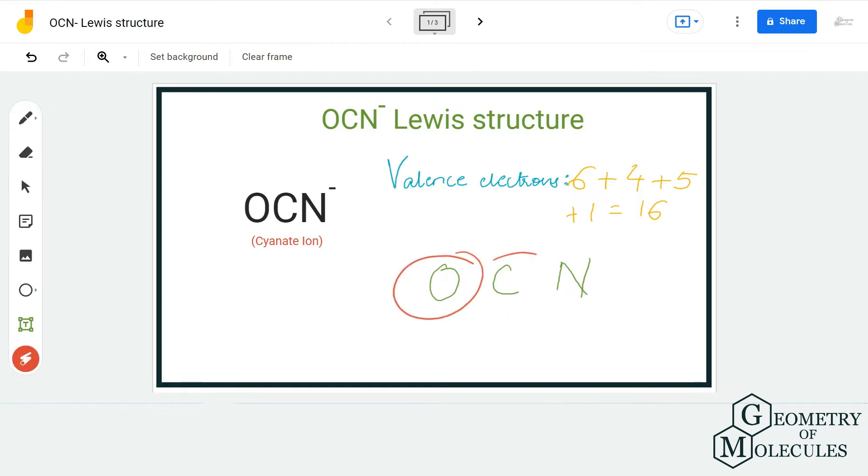Oxygen and nitrogen atoms will be placed around it like this. To show a bond between the atoms, I am going to place a pair of electrons between carbon and oxygen atom, and carbon and nitrogen atom.